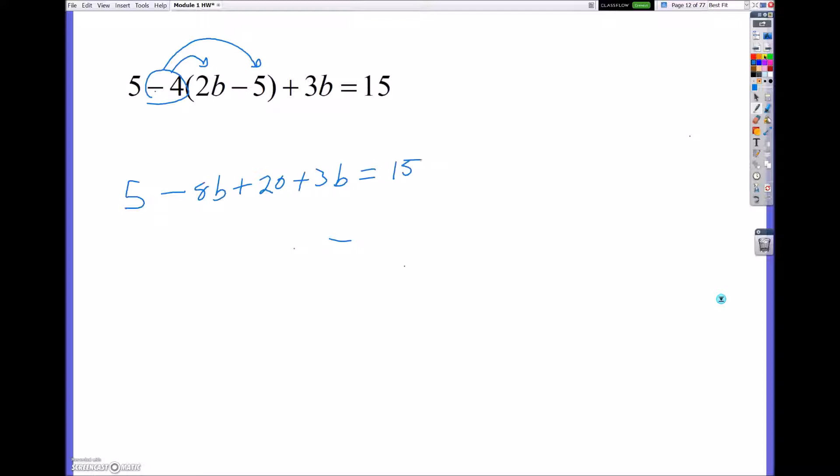So from here now, what I'm going to do is combine like terms. And so I have a negative 8b and a 3b that combines to negative 5b. And then I have 5 plus 20, which is positive 25 equals 15.